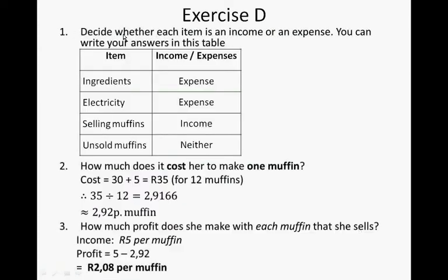These were the batches made. Decide whether each item is income or expense: ingredients is an expense, electricity is an expense, selling muffins is an income, and the unsold muffins are neither income nor an expense. How much does it cost to make one muffin? The cost is 30 plus 5 Rand, which is 35 Rand for 12 muffins. Divide 35 by 12 and you get 2.9166, which is about 2 Rand 92 per muffin.